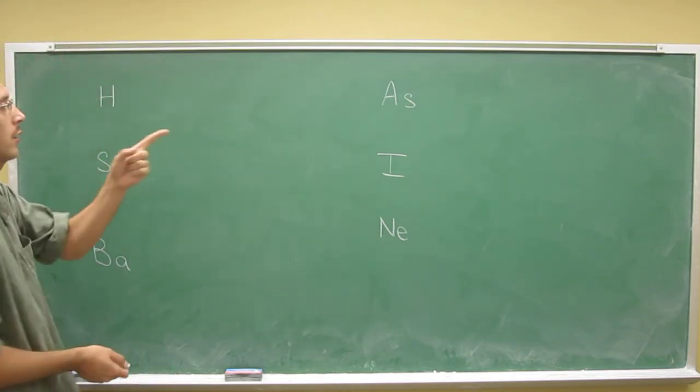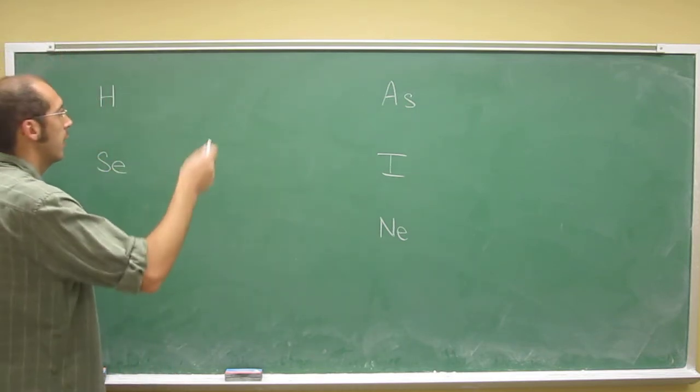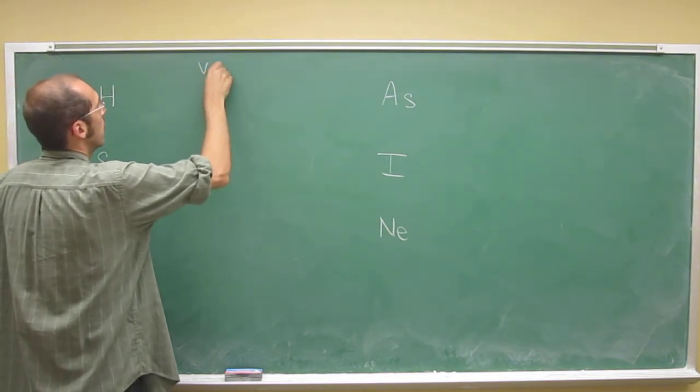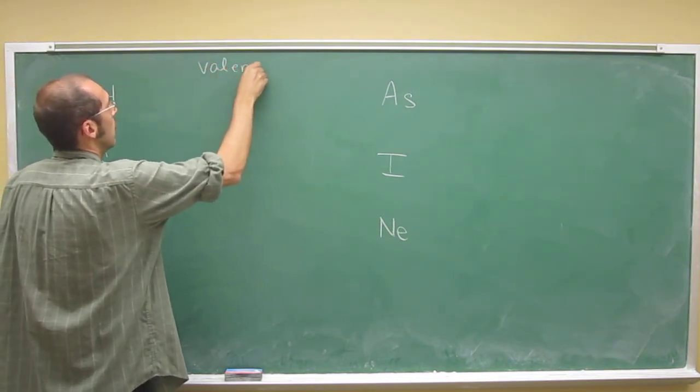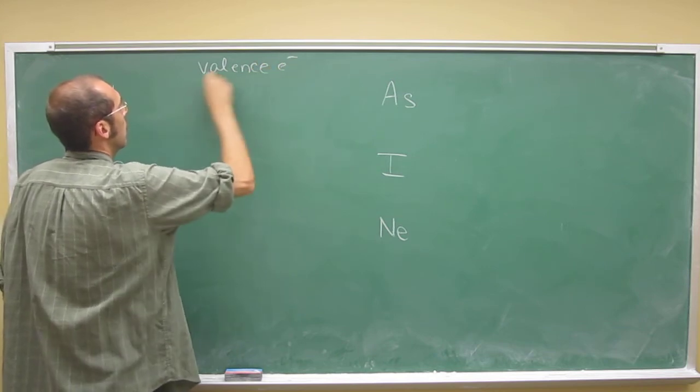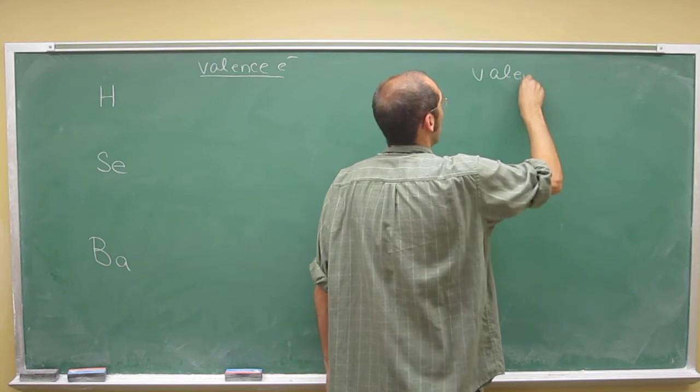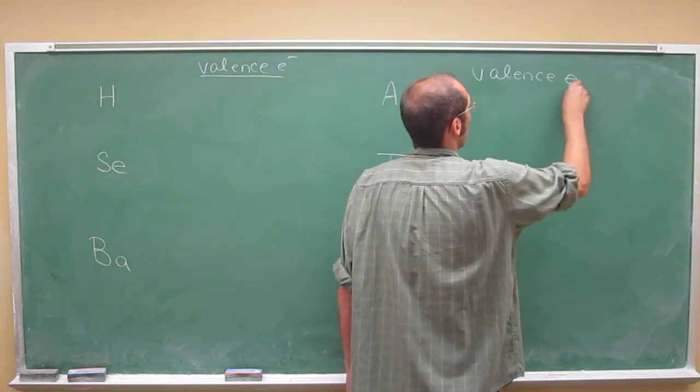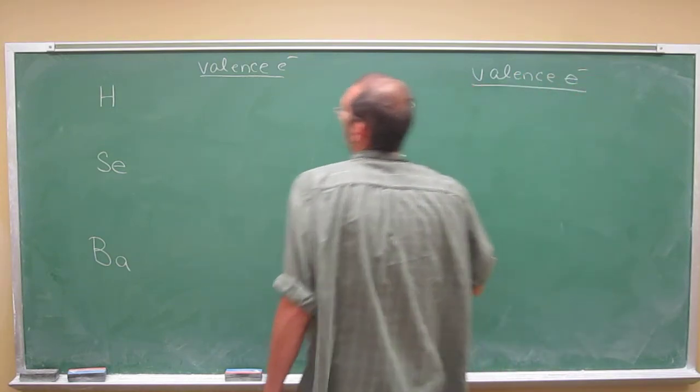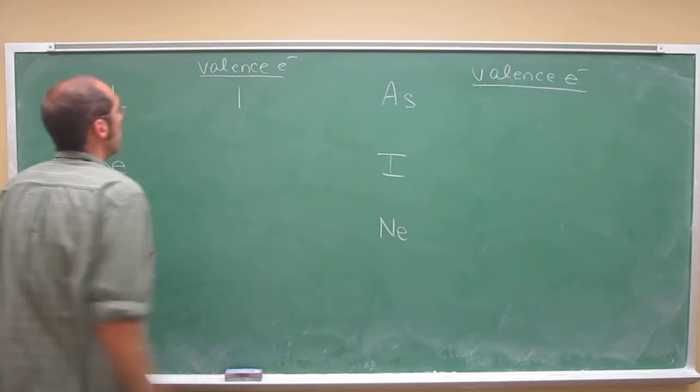So hydrogen is in group one, so it's got one valence electron. So one valence electron.